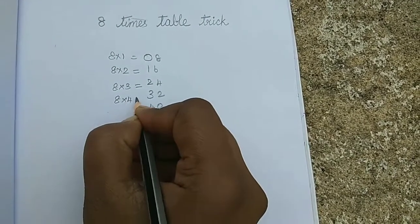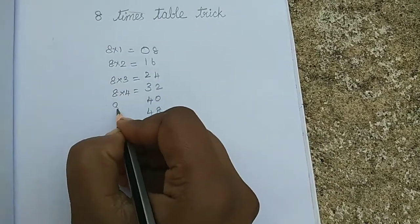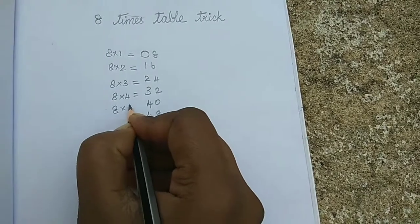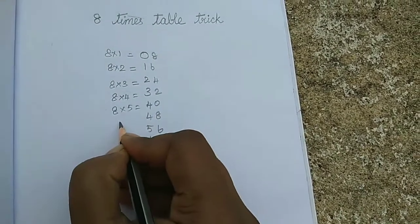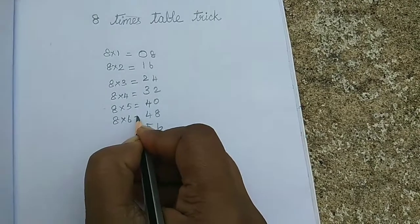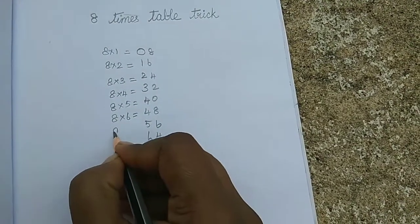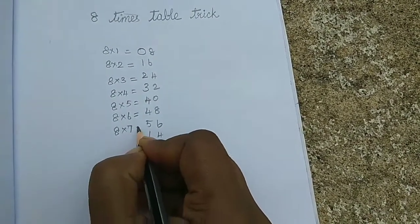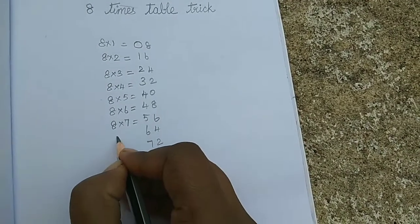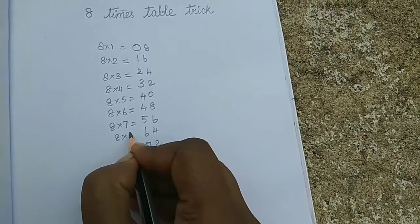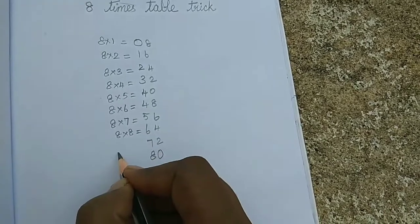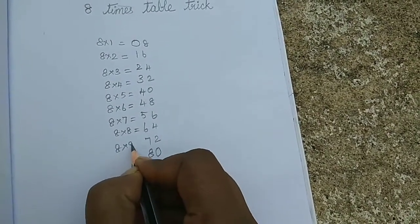8 × 5 = 40, 8 × 6 = 48, 8 × 7 = 56, 8 × 8 = 64, 8 × 9 = 72.